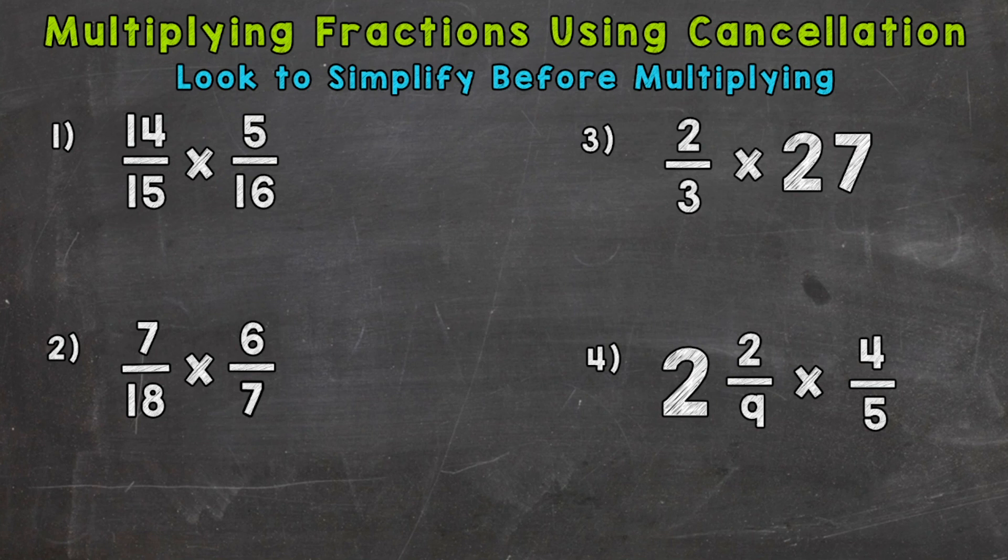So let's get into our four examples here and start with number 1 where we have 14 fifteenths times 5 sixteenths. What we need to do first is look for common factors between the numerators, the top numbers here, and the denominators. So top and bottom. We are not looking for common factors horizontally or side to side. Think of it like simplifying fractions, but you can use all of the numbers within the problem.